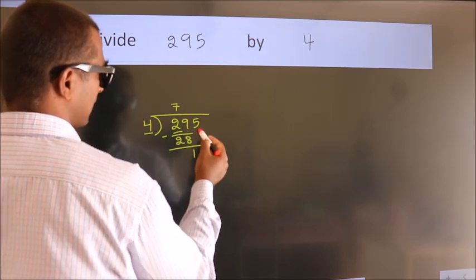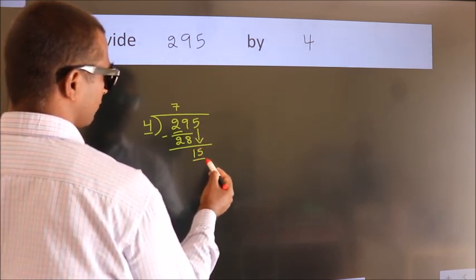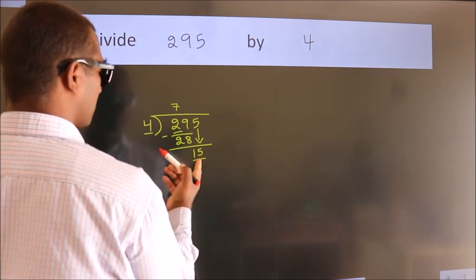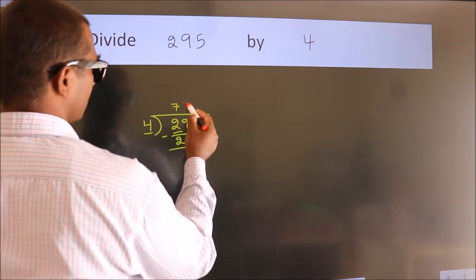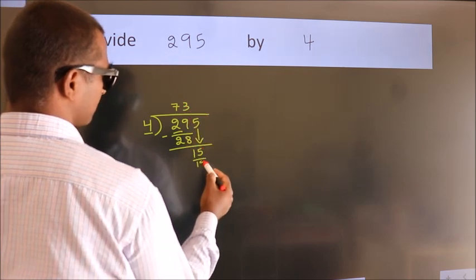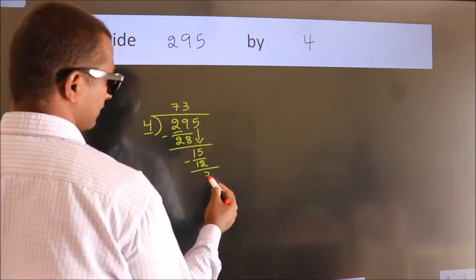After this, bring down the next number, so 5 down. So, 15. A number close to 15 in the 4 table is 4 times 3 equals 12. Now we subtract and get 3.